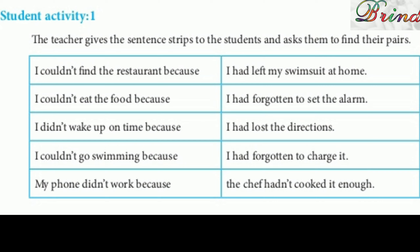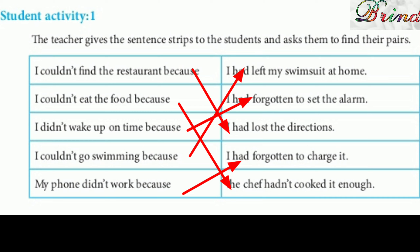Now student activity, children. We will just discuss. I couldn't find the restaurant because I had lost the direction. I couldn't eat the food because the chef hadn't cooked it enough. I didn't wake up on time because I had forgotten to set the alarm. I couldn't go swimming because I had left my swimsuit at home. My phone didn't work because I had forgotten to charge it.